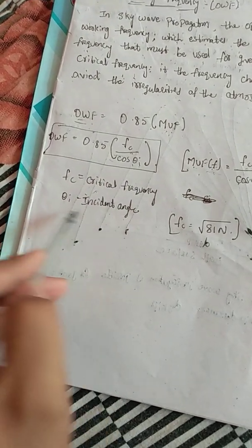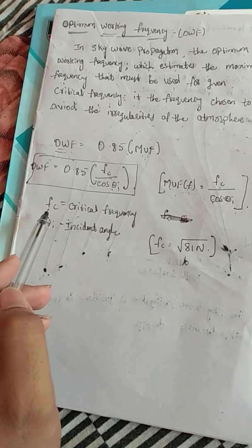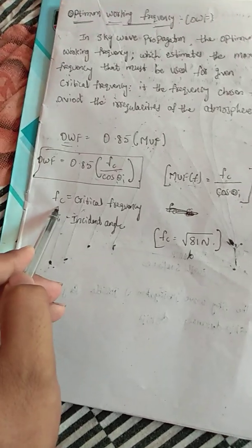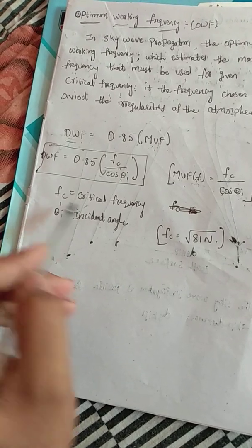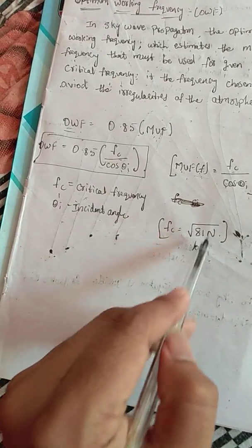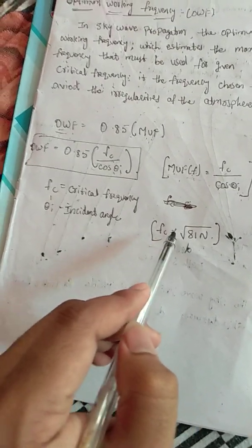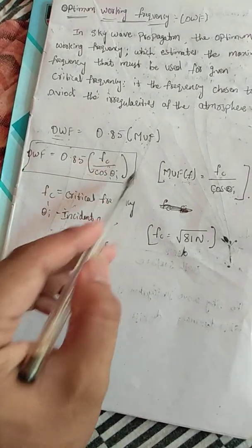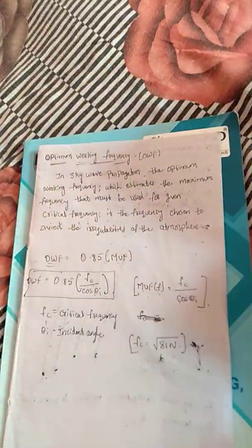Here, fc is the critical frequency and θi is the incident angle. If needed, we can also substitute fc = √(81N), which we derived earlier, to get the complete final expression for optimum working frequency. Next, we are going to discuss a topic called virtual height.